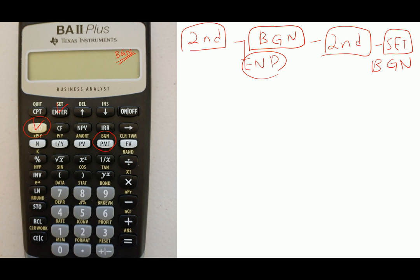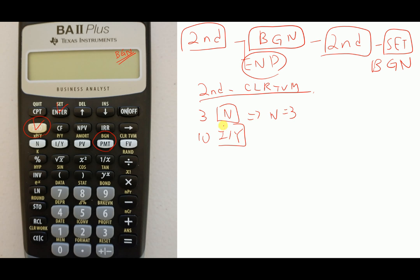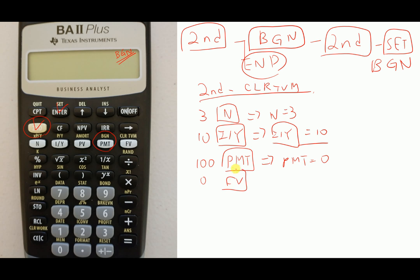Now let's compute the present value. The calculator input is exactly the same — clear the calculator first. Set N equal to 3, interest rate to 10, PMT to 100, and future value to zero. Computing the present value gives negative $273.55.